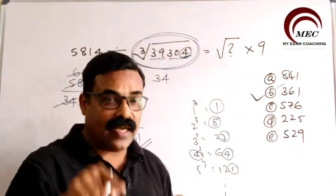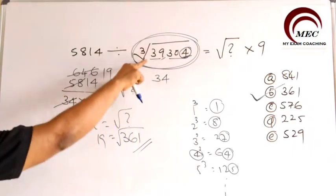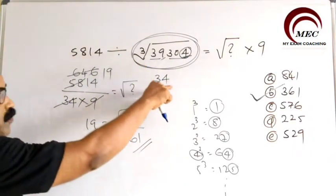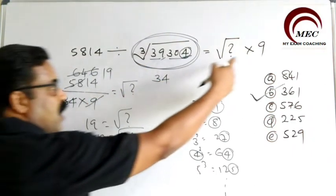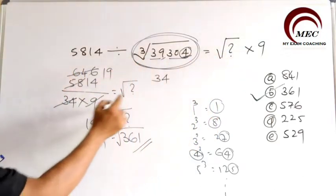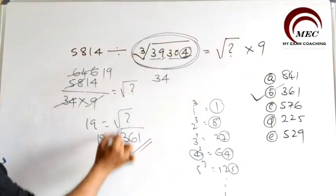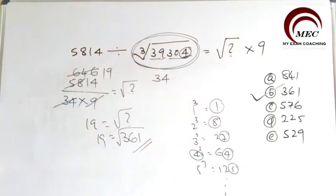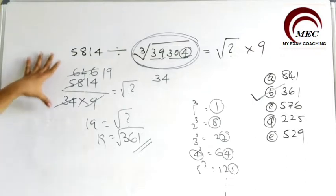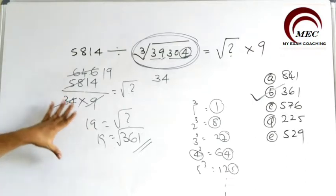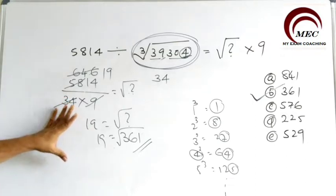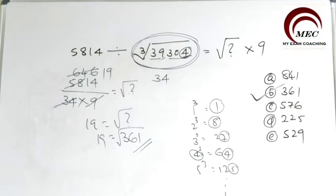The link is given in the description — kindly watch that. Then it will be easy for you. Put that value in and take this 9 to the other side; it becomes division. Find the value and do the simplifications. Once you practice this type of question, you can easily solve it within 20 to 25 seconds. Then we will go to the next question.